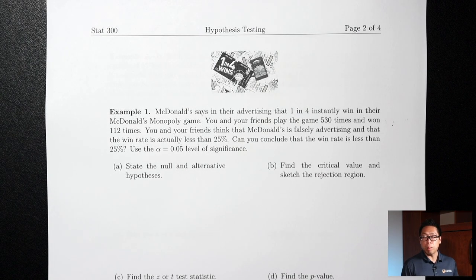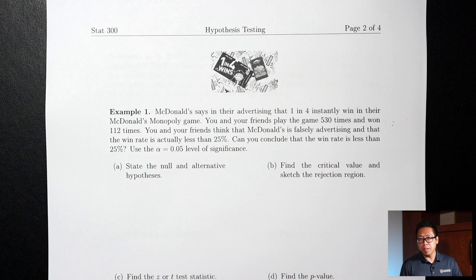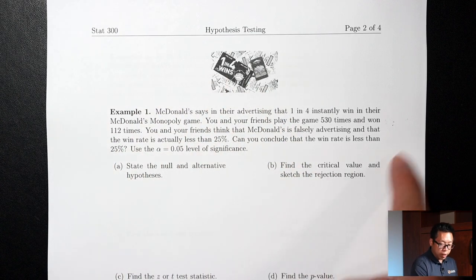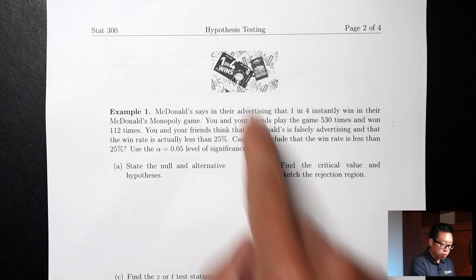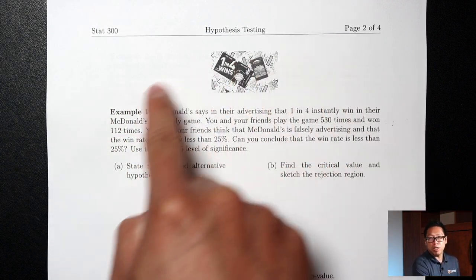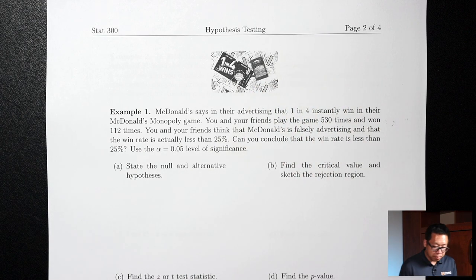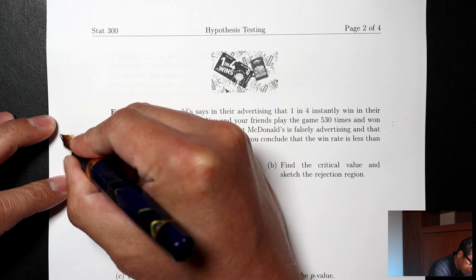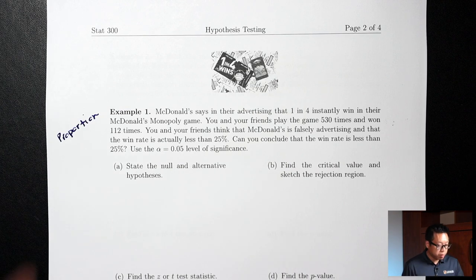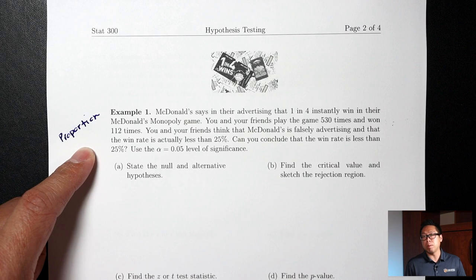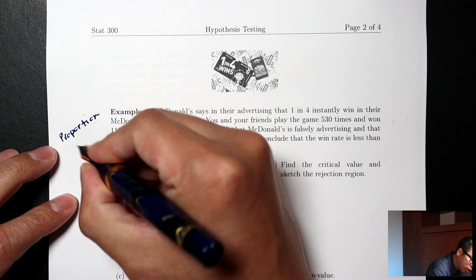Just like with confidence intervals, for hypothesis tests there will be a mean situation and a proportion situation. If you see the words mean and standard deviation in the question, it's a mean situation. If you don't see those words anywhere, it's a proportion situation. This question doesn't mention mean or standard deviation, so this is a proportion question. For proportions, we work with Z's; for means, we work with T's.